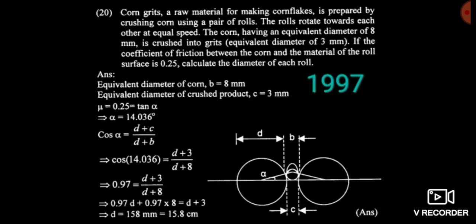Friends, see this question asked in 1997. Here the mu value is given and it is asking about the diameter of roll. The diameter of the roll is being asked. The friction coefficient value is given. The clearance is given and the diameter of feed is given. First, we use tan alpha equal to mu.